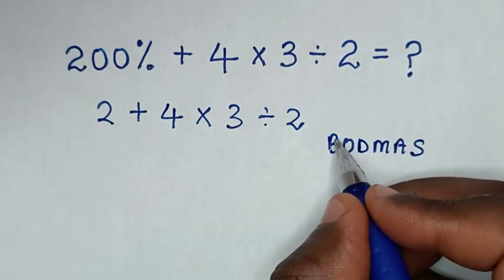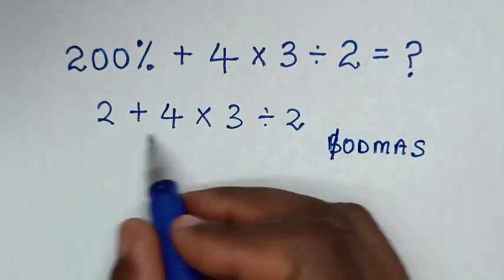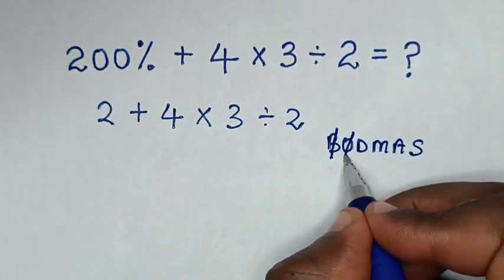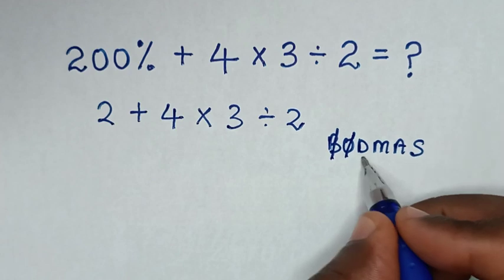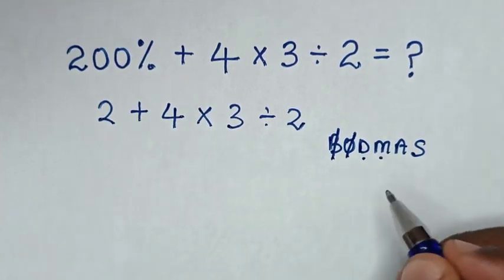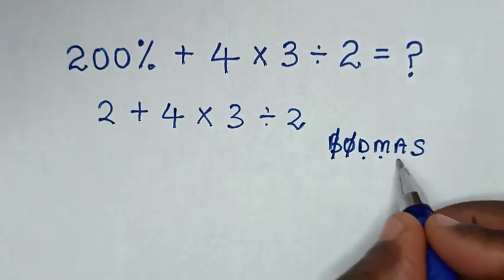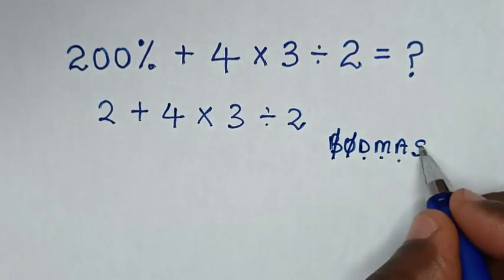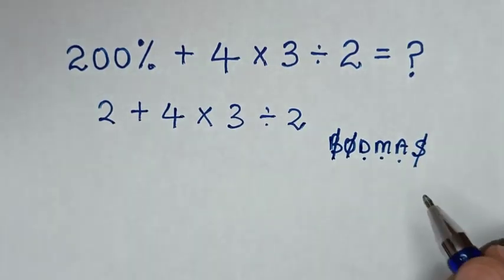We don't have brackets in these operations. We don't have order or exponents. But we have division, which is this divided by this, and we have multiplication here. We have addition here, but we don't have subtraction.